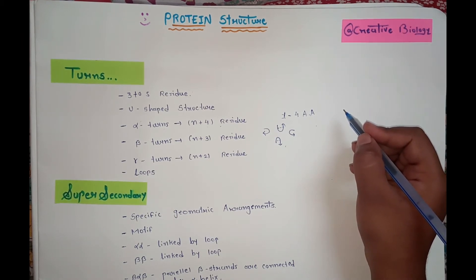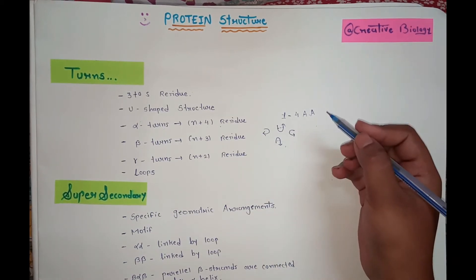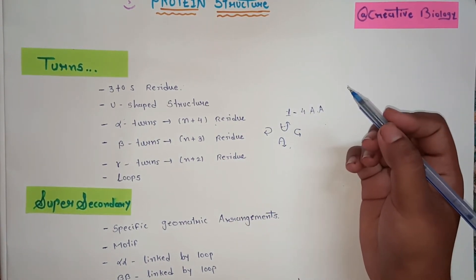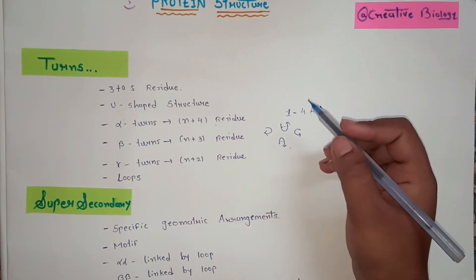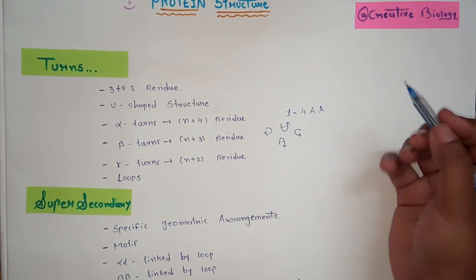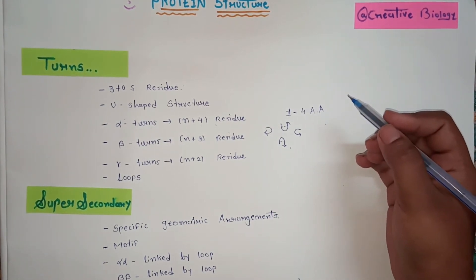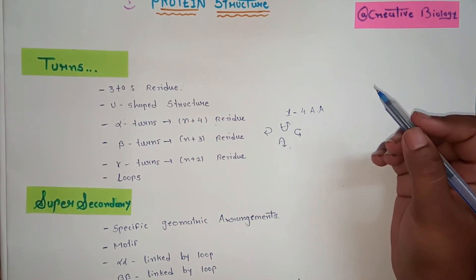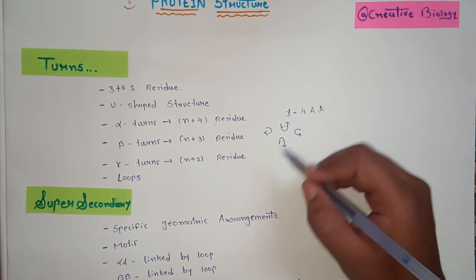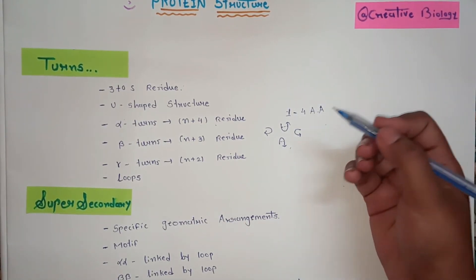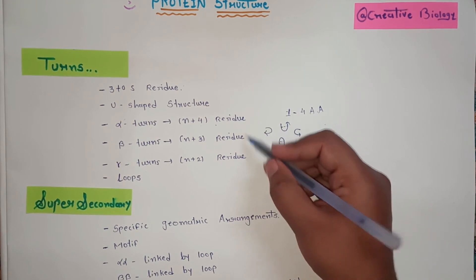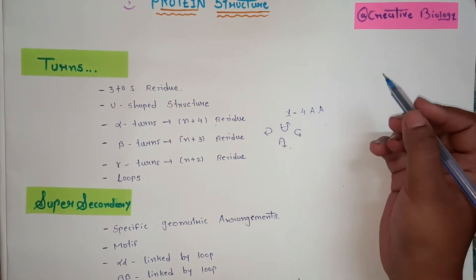A major exam question is: which amino acids form turns in protein structure? The answer is glycine and proline. Glycine has the simplest side chain, so it easily forms turn structures. Proline, due to its built-in bent nature, allows the polypeptide backbone to fold into turns — and it majorly forms alpha turns, as those are the longest of all turn types.